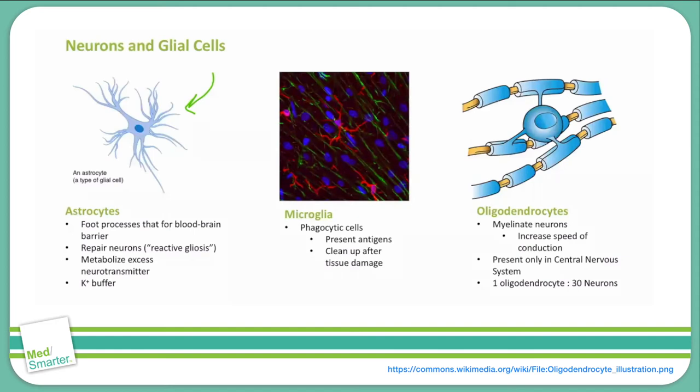An important thing you need to know about oligodendrocytes for step one is that a single oligodendrocyte can myelinate the axons of multiple neurons, up to 30 actually. This is another way that oligodendrocytes differ from Schwann cells, since a single Schwann cell can only myelinate a single neuron's axon. You can see what oligodendrocytes look like in this image here. They are also said to classically have a fried egg appearance on histologic slices.